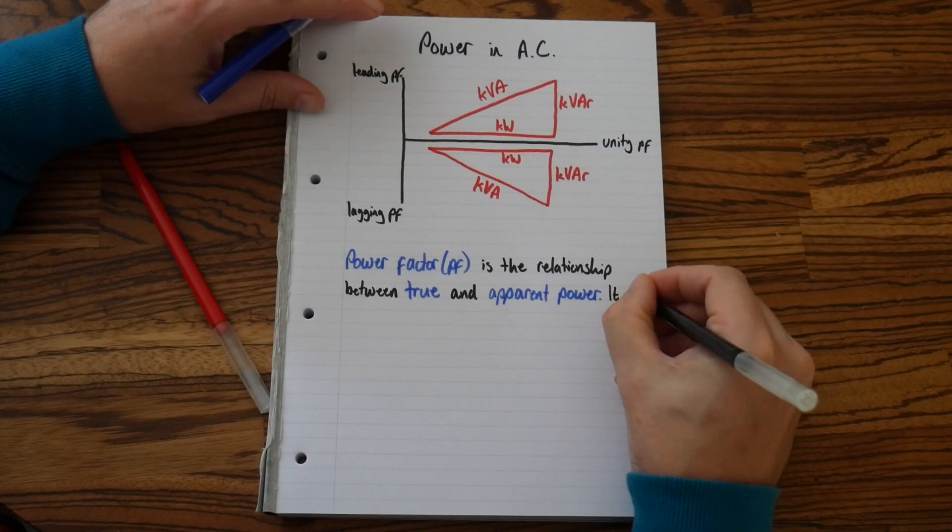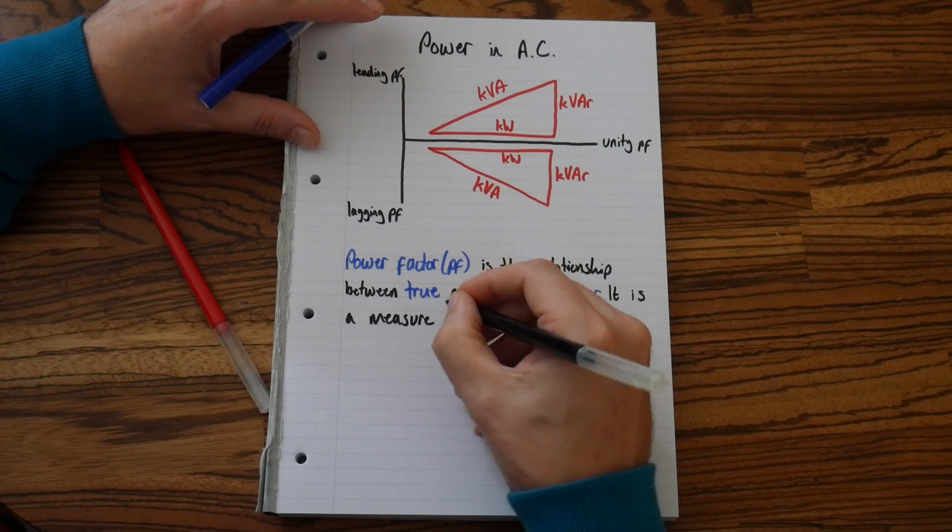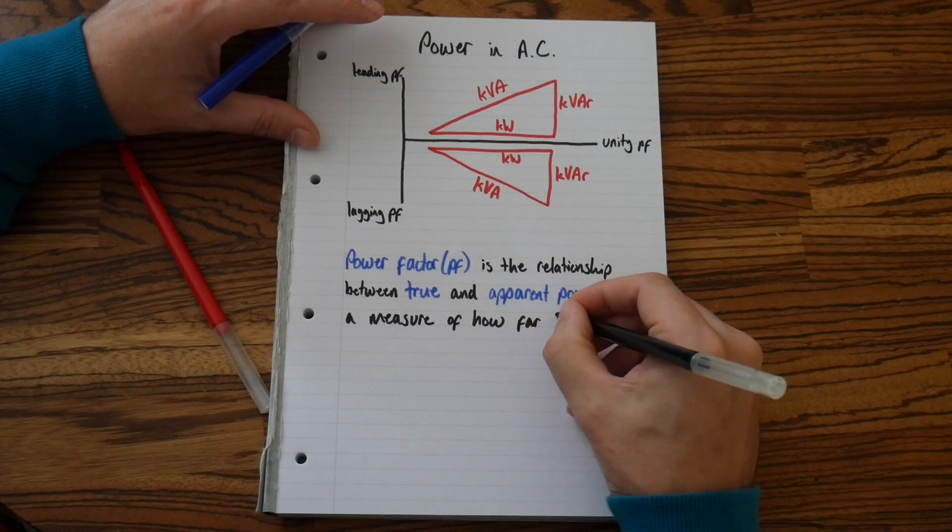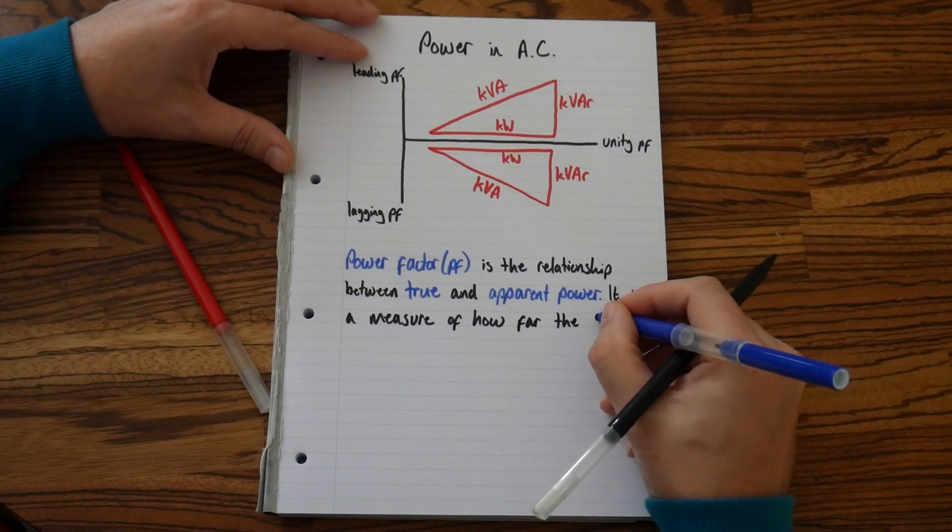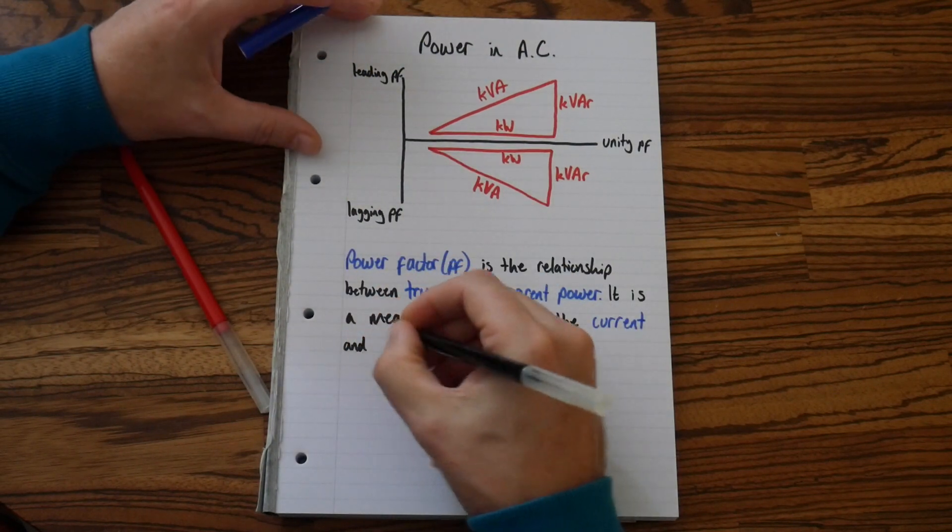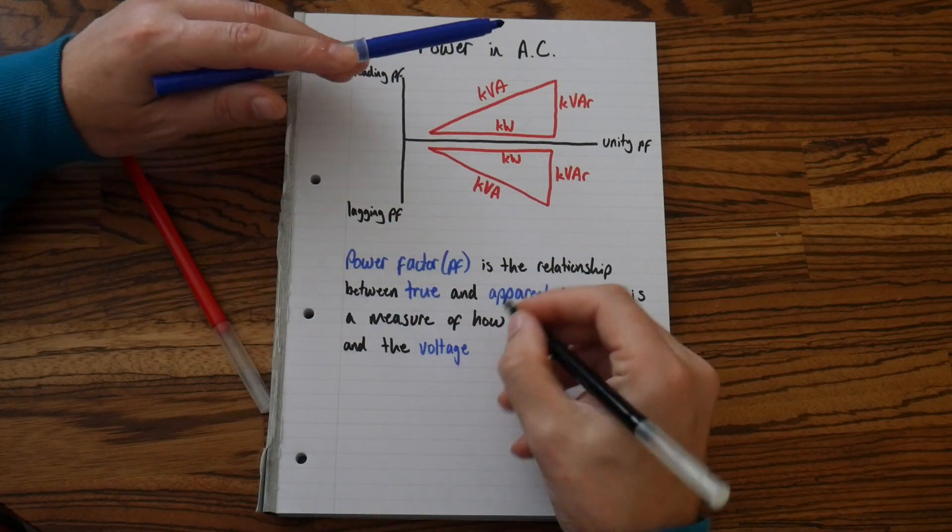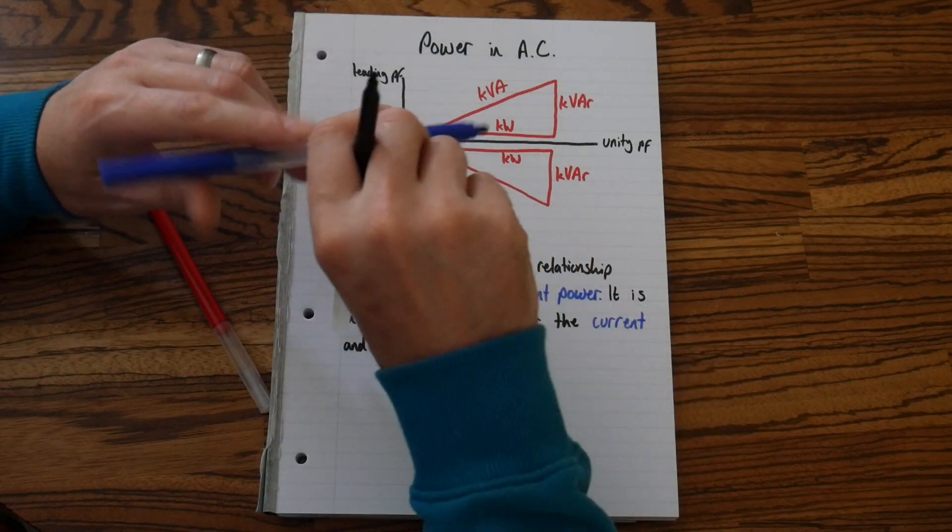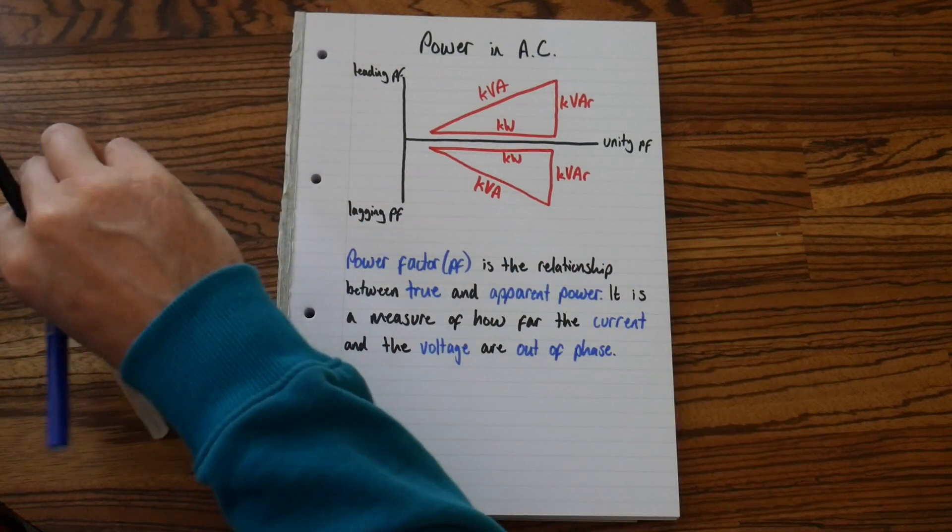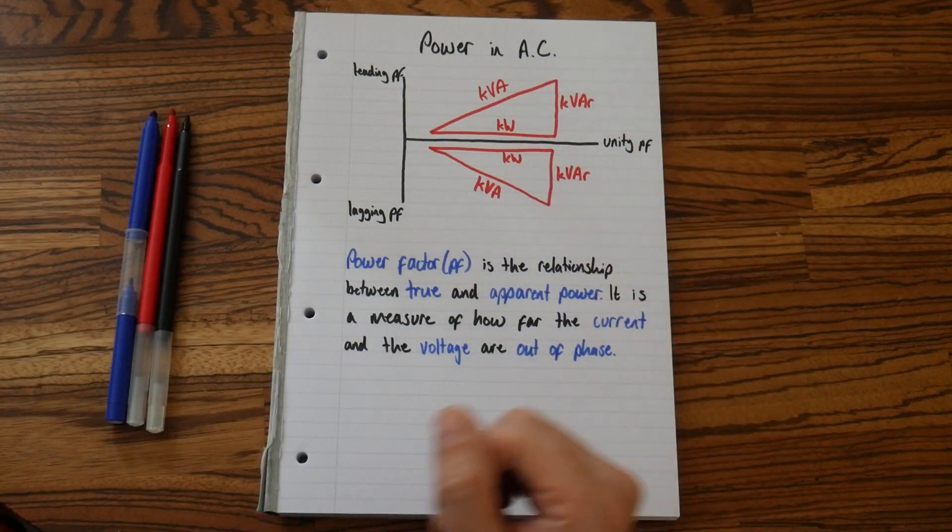It is a measure of how the current and the voltage are out of phase. There you go. There will be, or there have been, questions where it's asked you to draw either of these two triangles. And there you have it.